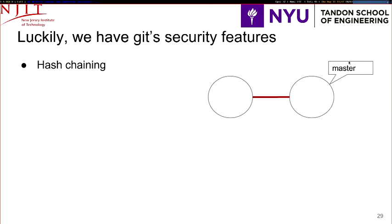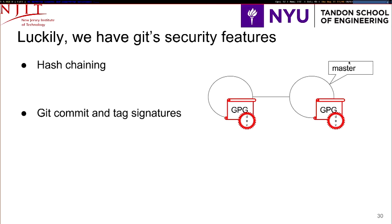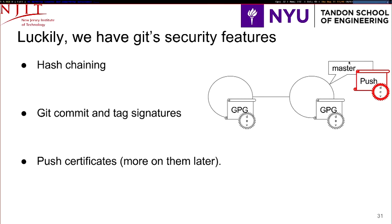The most well-known security feature is hash chaining. If someone compromises a repository, they cannot put changes far down into the history and expect them to be propagated. It also means that if someone tampers with the commits, the history will fail to verify. We also have Git commit and tag signatures that prevent attackers from creating new commit or tag objects, so every change in the history can be authenticated and attributed to a user. We also have push certificates, a relatively recent addition, though not widely used in production yet.